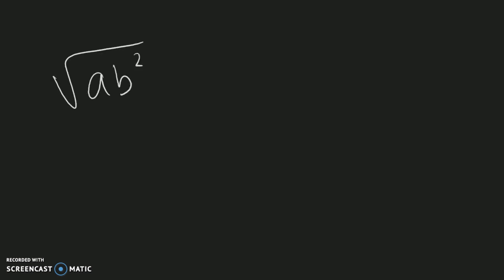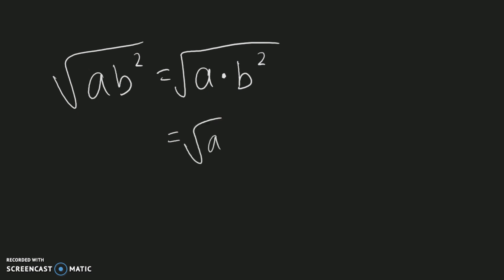Now things get slightly trickier. The square root of ab² can be separated into the square root of 'a' multiplied by the square root of b². We know that the square root of b² equals 'b', so the 'b' can be removed from under the square root and placed outside, leaving 'b' root 'a'.